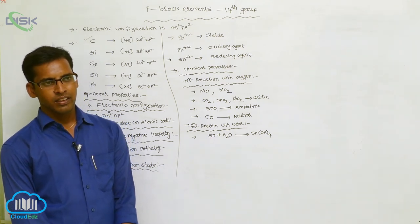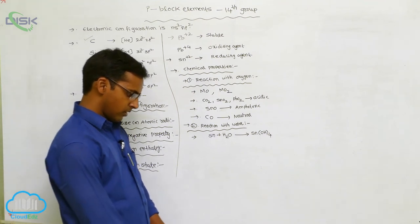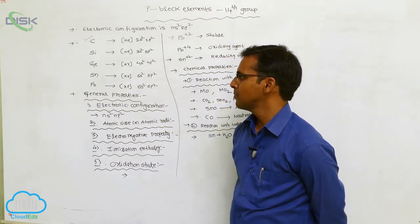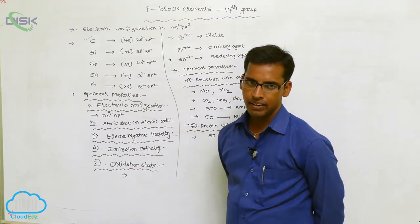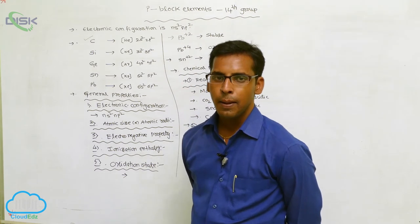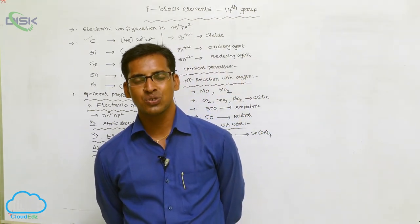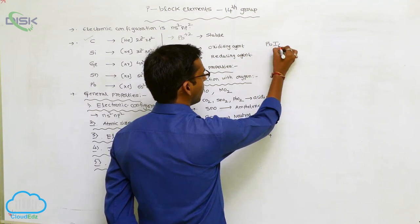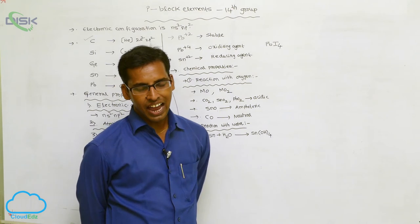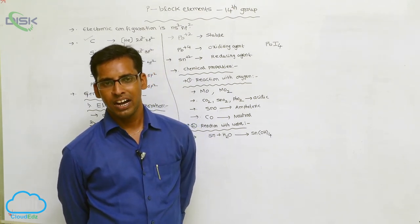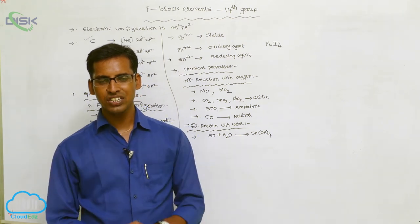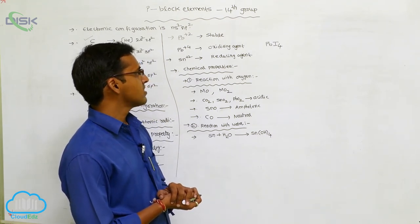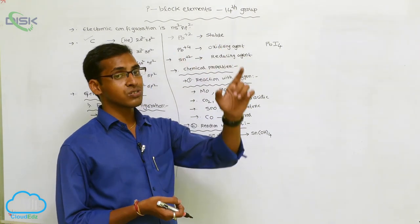Physical properties of Group 4A elements: carbon and silicon are non-metals, germanium is a metalloid, and tin and lead are metals. Lead in the +4 state is a strong oxidizing agent. For example, PbI₄ (lead iodide) is highly unstable due to strong repulsions between lead and iodine, though it acts as an oxidizing agent.